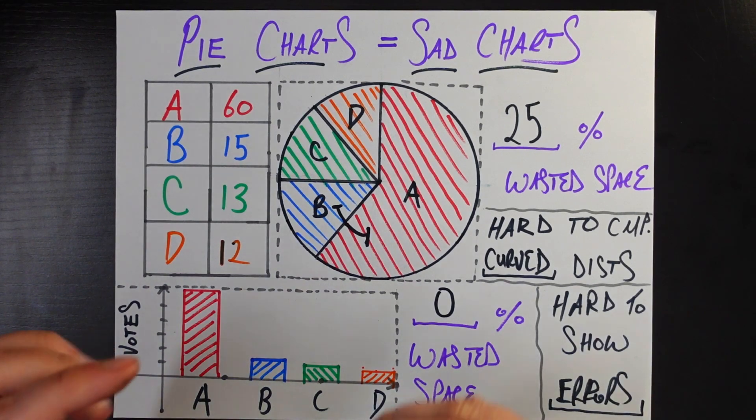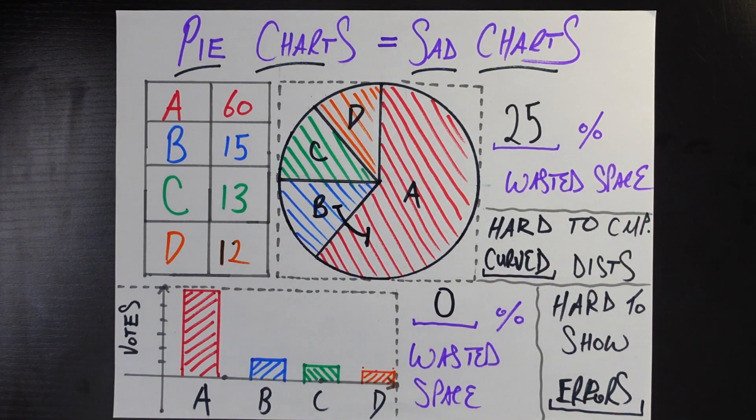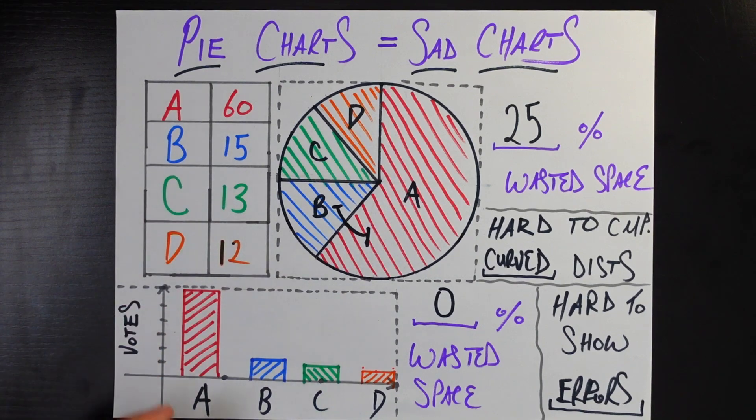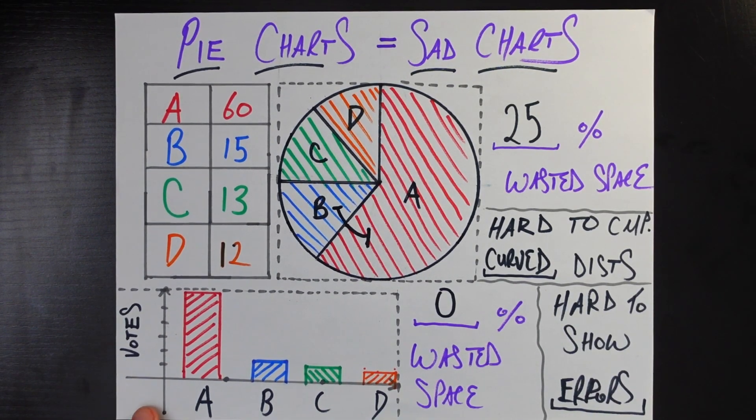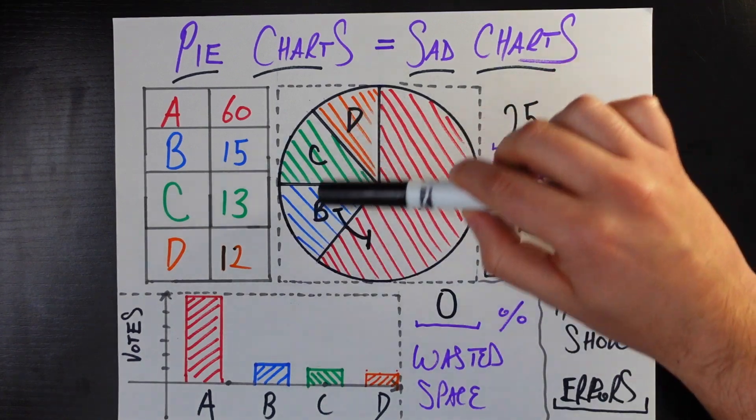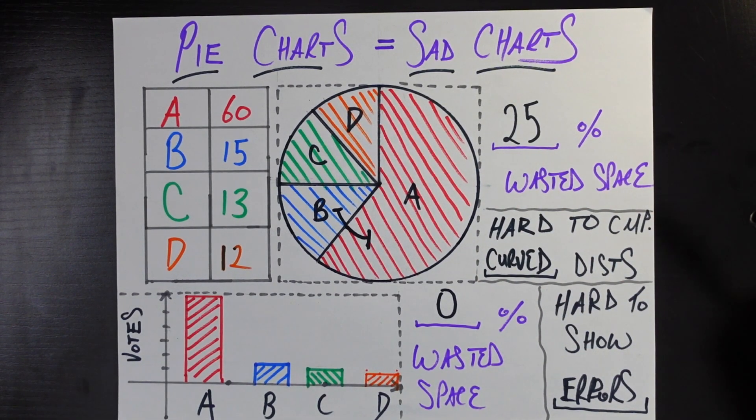Now, what about this other thing? It was hard for us to compare these curve distances. It's hard for humans to decipher the length of curves, but that's not a problem here because we're deciphering the lengths of lines. Now, you can still say that if two line segments are really close together, it's hard for me to know which is bigger than which. But even in this case where these numbers only differ by two and these two differ by one, I would say it's still a heck of a lot easier for me to just visually look at B versus C and know which one's bigger or look at C versus D and know which one's bigger than it is for me to do the same thing on this pie chart here.